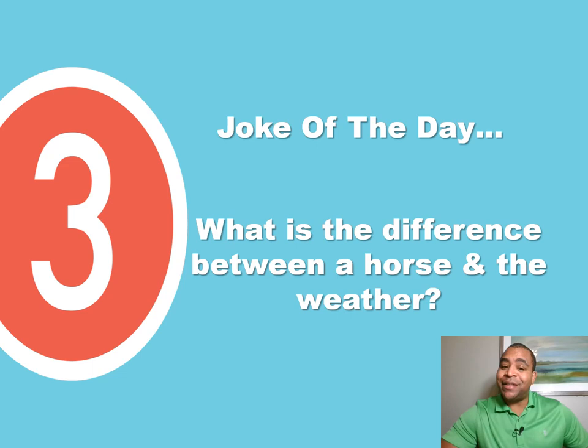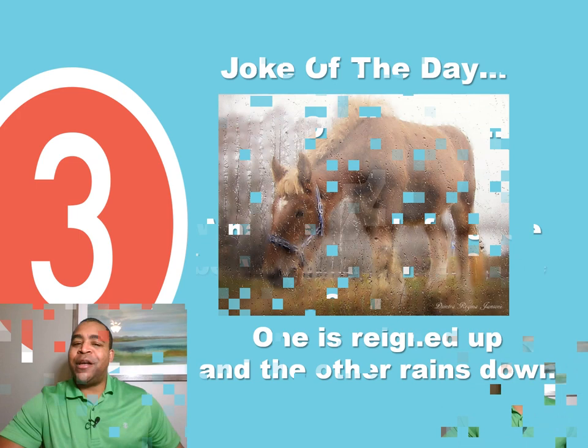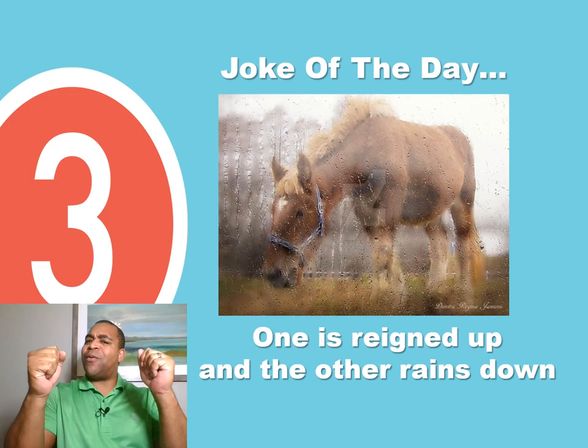But as always, I like to start off with a joke, and here's today's joke. So what is the difference between a horse and the weather? The difference between a horse and the weather is one can be reined up and the other rains down.